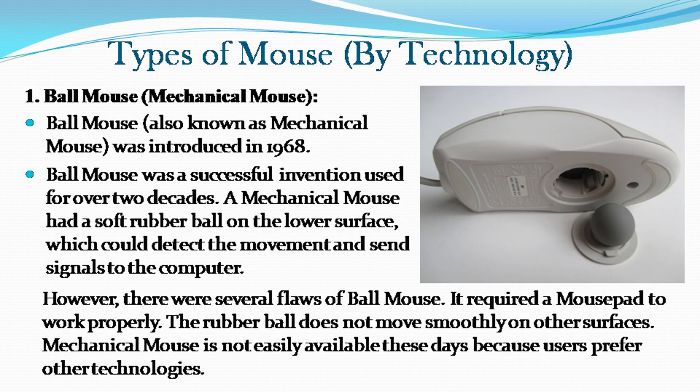Ball mouse, also known as mechanical mouse, was introduced in 1968. It was a successful invention used for over two decades. A mechanical mouse had a soft rubber ball on the lower surface which could detect movement and send signals to the PC. However, there were several flaws — it required a mousepad to work properly, and the rubber ball does not move smoothly on other surfaces. Mechanical mouse is not easily available these days because users prefer other technologies.